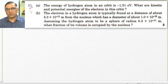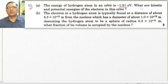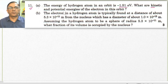In problem number 11, Part A, the total energy of the electron in an orbit is given to be minus 1.51 electron volts, and we are supposed to find its kinetic energy as well as potential energy.